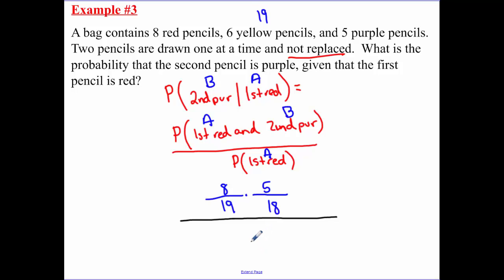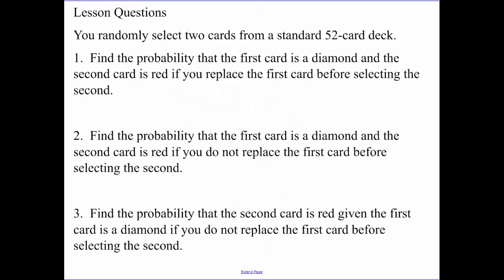Now our first, given that the first is red, well that is 8 out of a total of 19 items in our box. That simplifies to 5 over 18. There are your three lesson questions for the day. Please make sure those three questions are submitted on time.